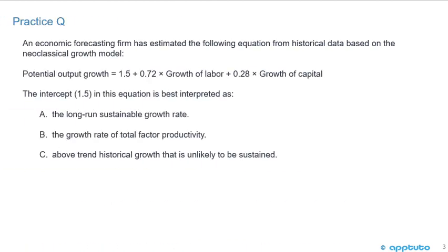We're going to do a couple of practice questions to finish this LOS. An economic forecasting firm has estimated the following equation from historical data based on the neoclassical growth model. The potential output growth equals 1.5 plus 0.72 times the growth of labor plus 0.28 times the growth of capital. The intercept 1.5 in this equation is best interpreted as: